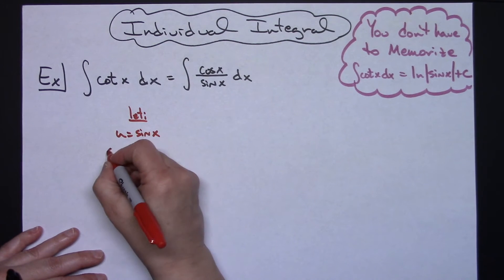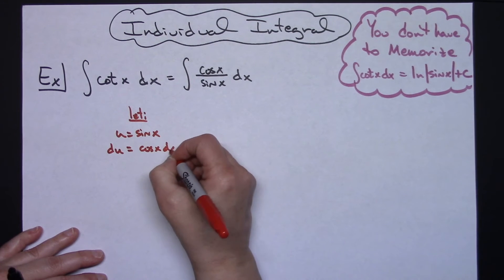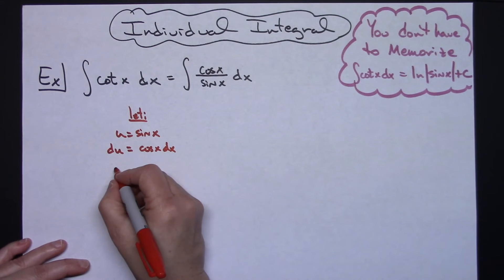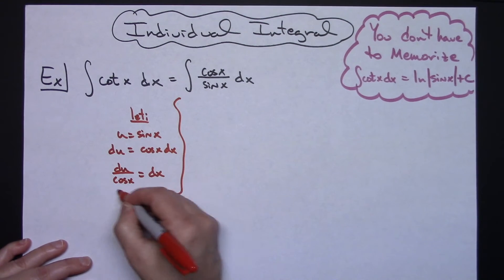When I take the derivative of both sides, I'll have a du is equal to a cosine x dx. If I go ahead and solve all the way down for my dx, I'll have a du over cosine x equaling that dx.